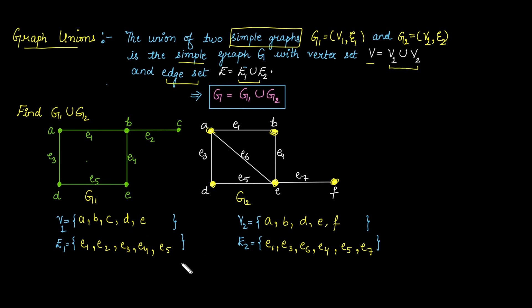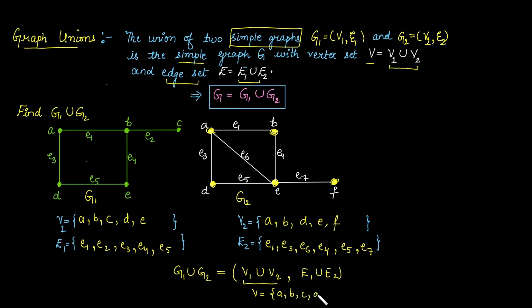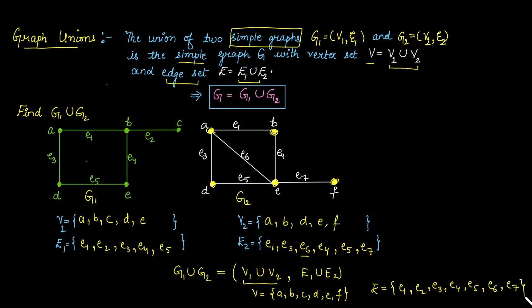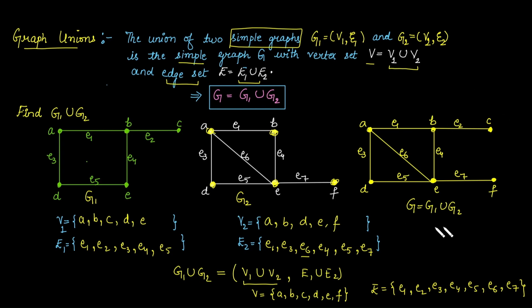Now we find G1 union G2, which consists of vertex set V1 union V2 and edge set E1 union E2. The vertex set V equals {A, B, C, D, E, F}. The edge set E equals {E1, E2, E3, E4, E5, E6, E7}. Using these, we can construct the union of the two graphs.